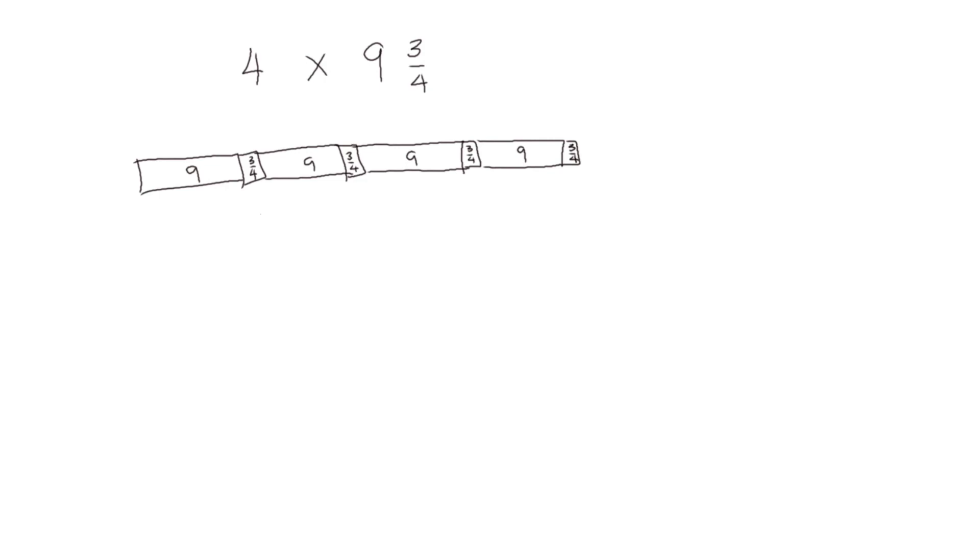So we know we can, using associative property, change our grouping and group all of the ones together. Grouping all the whole numbers and then we'll group all the fractional parts. If we show this in a number sentence, we have 9 four times and we have 3 fourths four times.